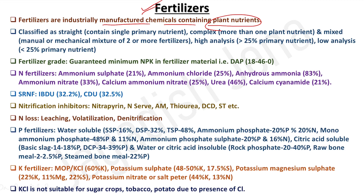A fertilizer bag consists of: the nutrient itself, a conditioner that maintains the physical properties of the fertilizer, and filler material — an inert material added for ease of handling and longer storage life. So basically three to four components are present in a fertilizer bag.